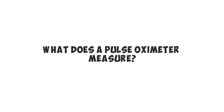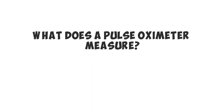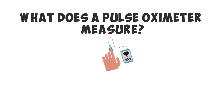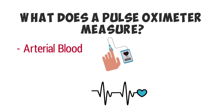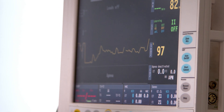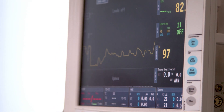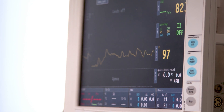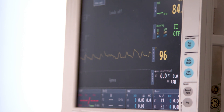So what does a pulse oximeter measure? A pulse oximeter measures the oxygen saturation in the blood and gives a heart rate measurement. More precisely, it measures the amount of oxygen being carried by hemoglobin in arterial blood, and this reading is known as the SpO2. So the primary function of a pulse oximeter is to measure oxygen saturation.